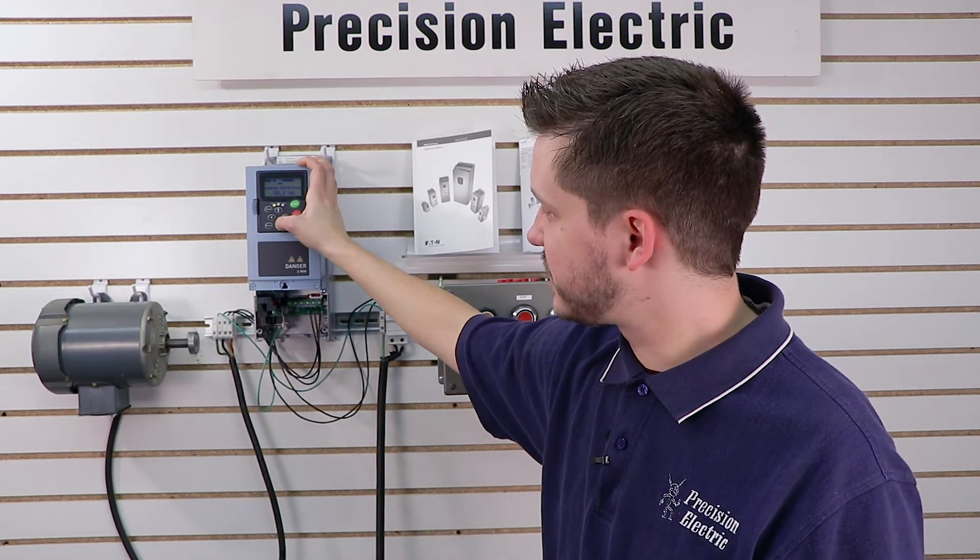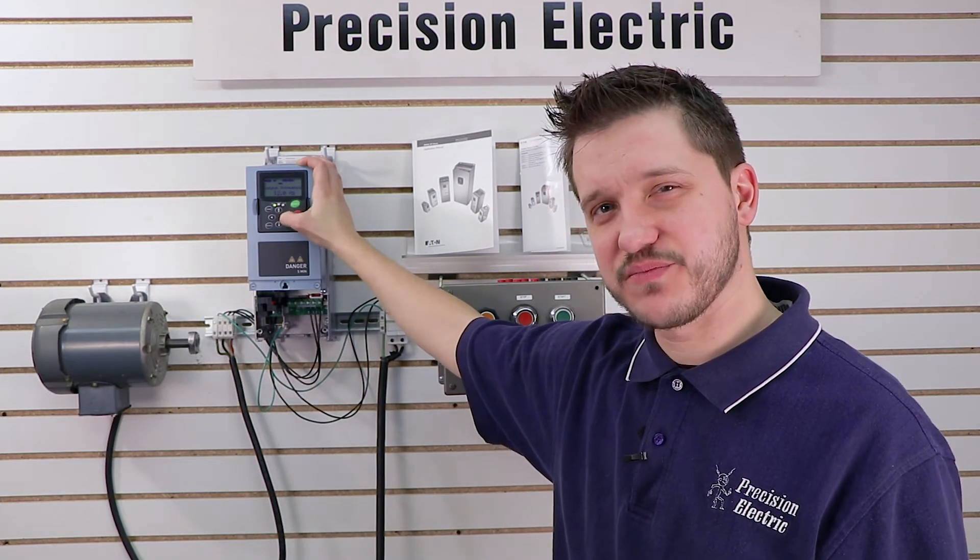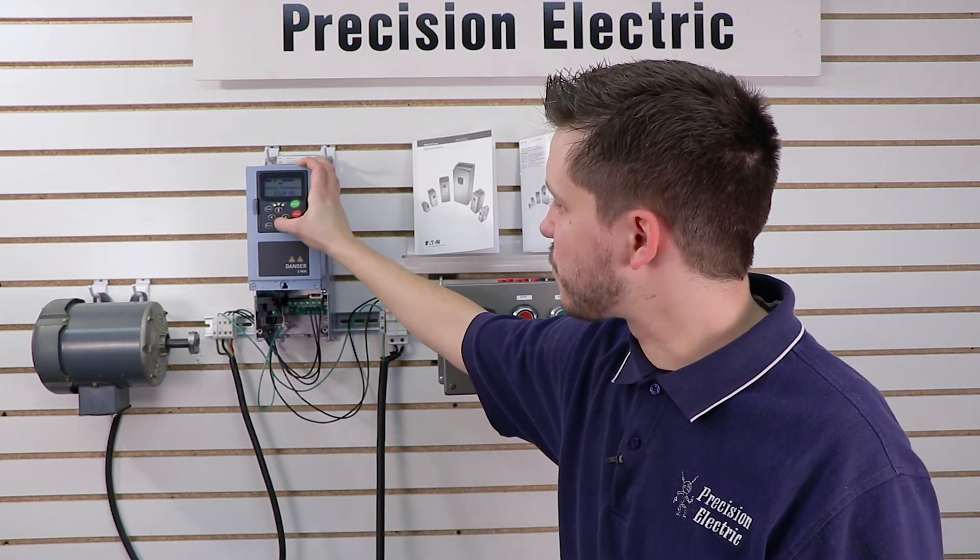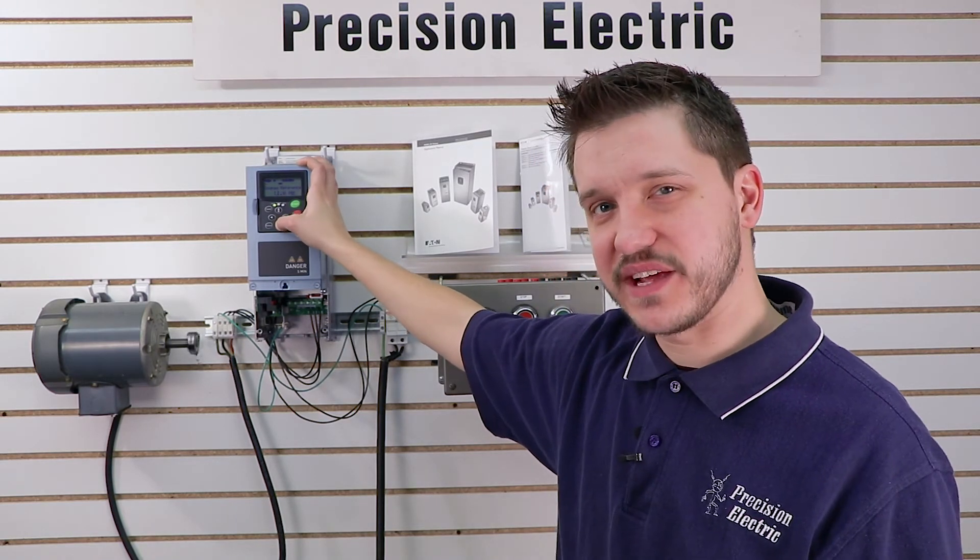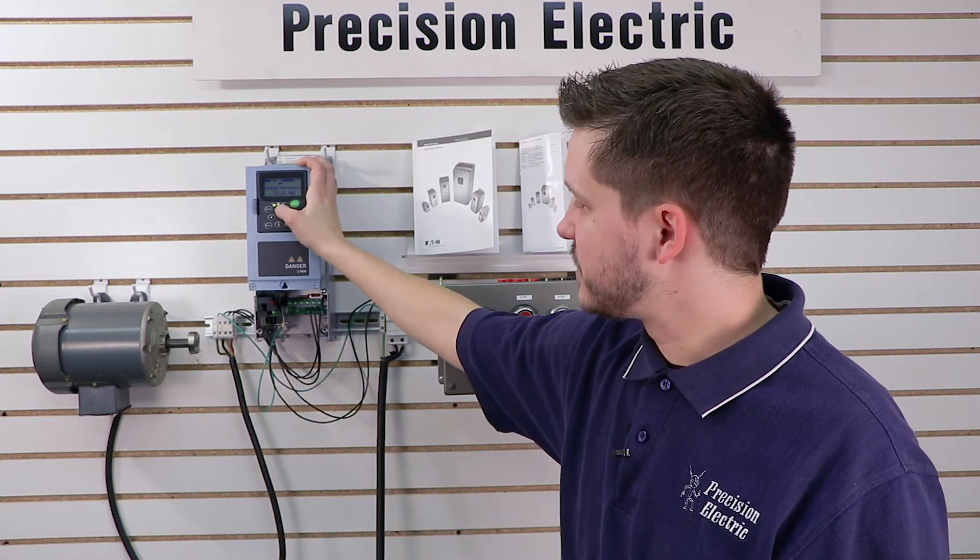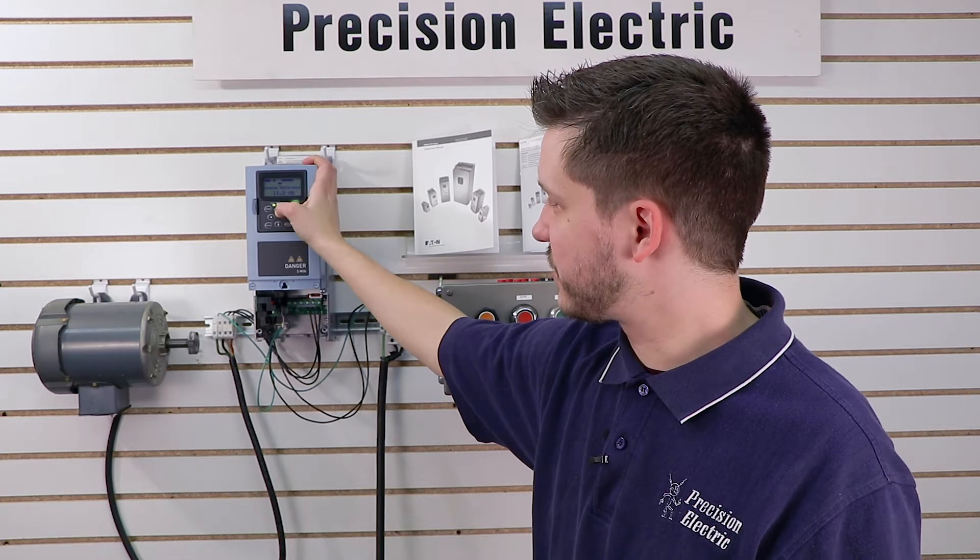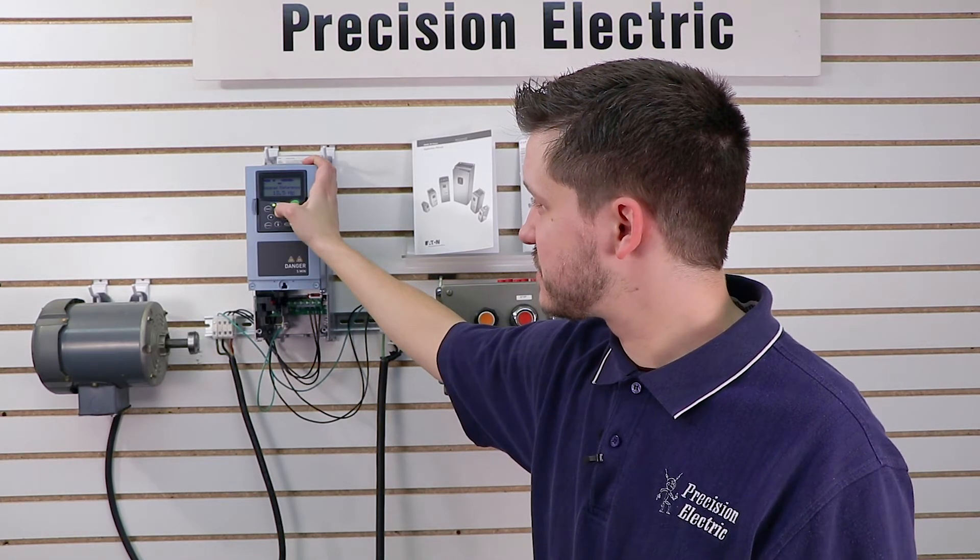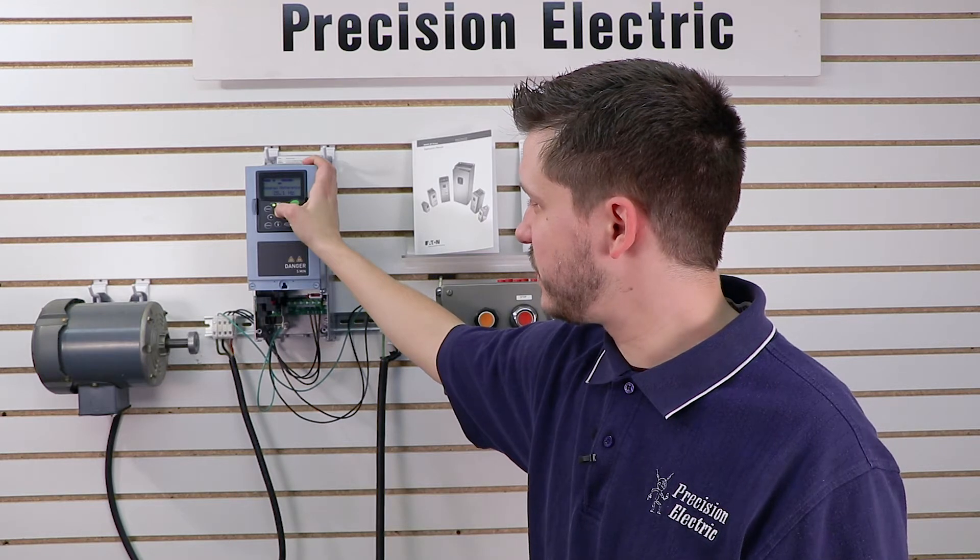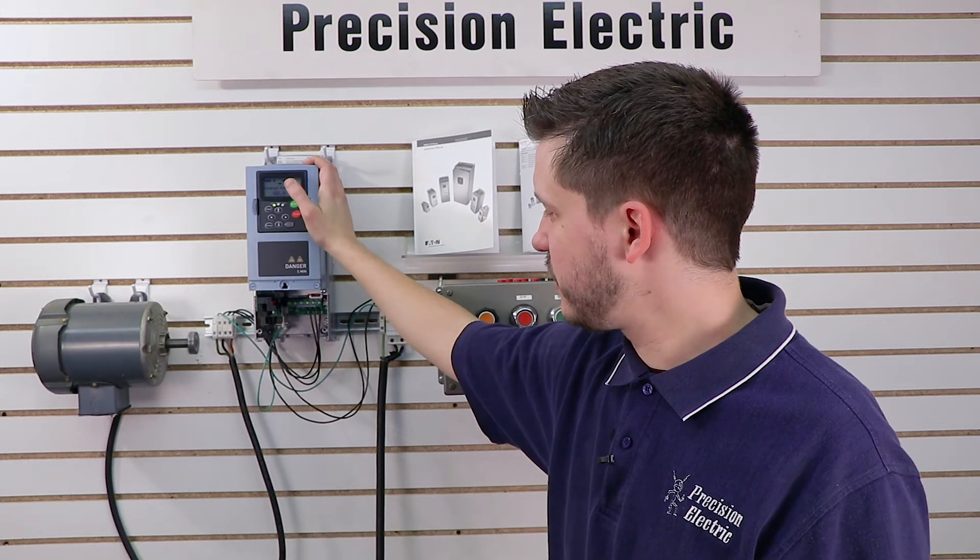If I hold it down, it goes down a lot faster than if I just press it one at a time. If I press it one at a time, it just does it in tenths, which is pretty slow. It'll take a while. That's more for dialing in the speed. But as you can see, my motor is running slower. And I can hold the up arrow key as well. And we can go all the way up to 60 hertz. So let's see it run full speed. There we go.